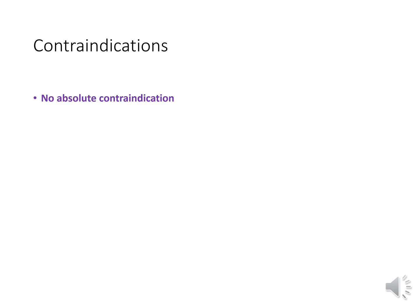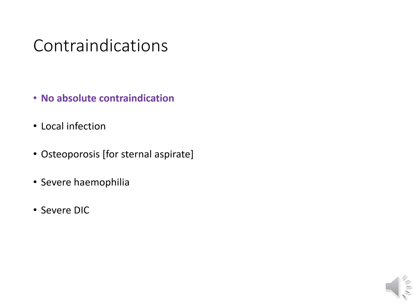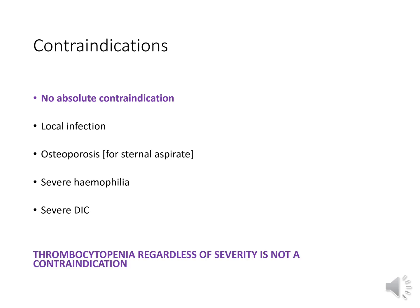Contraindications to the procedure: there are no absolute contraindications. Relative contraindications include local site infection, wherein you can change the site of the procedure. Osteoporosis, which is contraindicated for sternal aspirates. Severe hemophilia and severe DIC — in these patients, the procedure can be performed 24 hours after transfusion of fresh frozen plasma. Thrombocytopenia, regardless of severity, is not a contraindication.